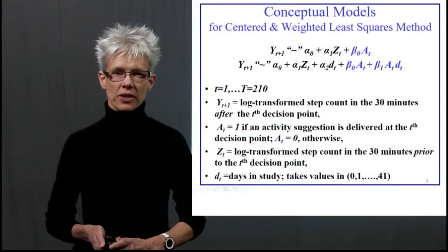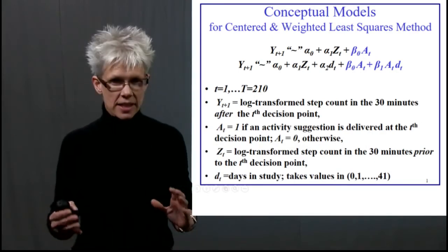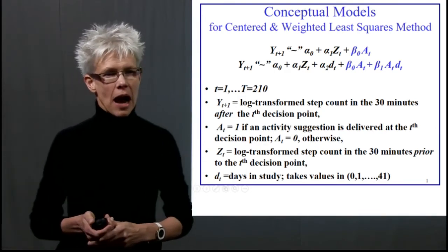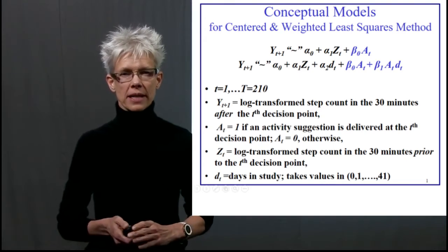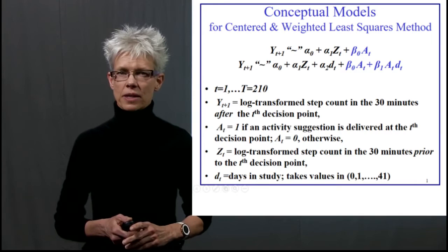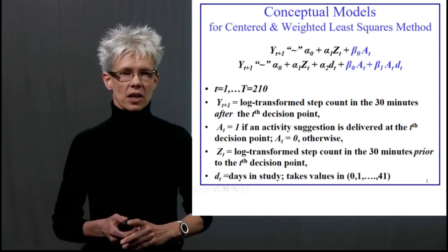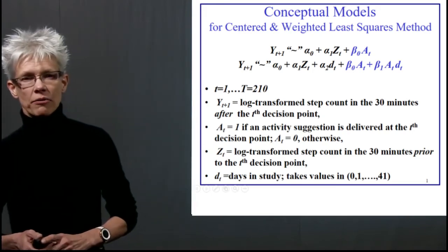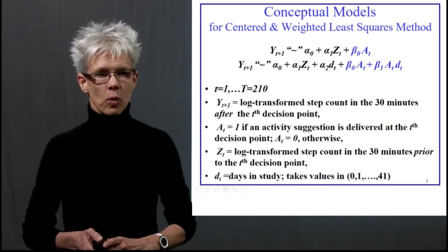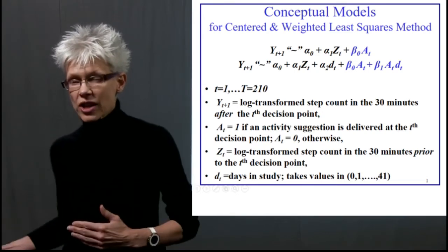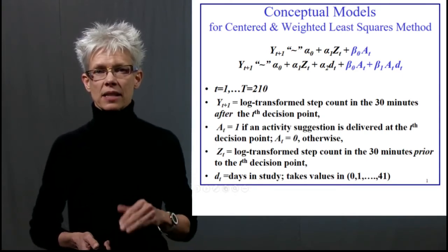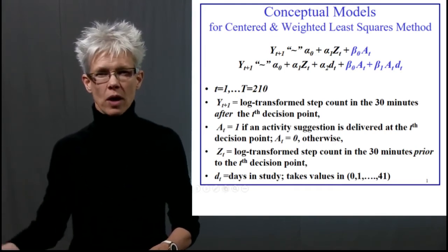Here you see some conceptual models. The outcome Y is the log-transformed step count in the succeeding 30 minutes — a log transformation is customary in activity studies to improve the accuracy of confidence intervals. A_T is the indicator of receiving a message versus not at decision point T: one if you got the message, zero otherwise. Z is your prior activity level before that decision time, and D indicates the length of time you've been in the study, taking the value zero on the first day and 41 on the last day.